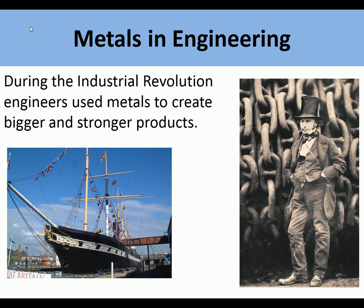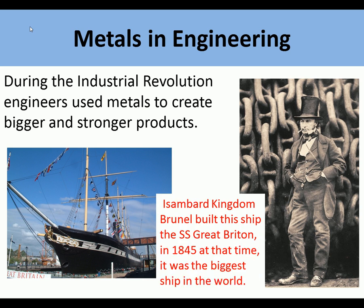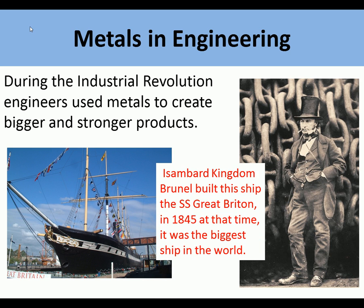During the Industrial Revolution, engineers used metals to create bigger and stronger products. Isambard Kingdom Brunel built this ship, the SS Great Britain, in 1845, and at that time it was the biggest ship in the world, and that was made from metal.